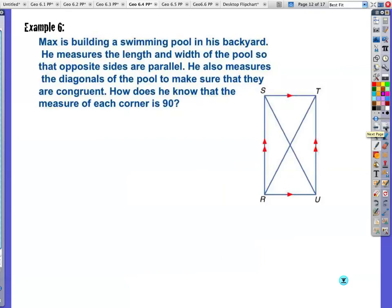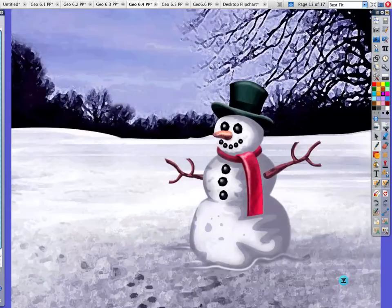Example 6 is very similar here. I have the information to let you know that it's a parallelogram with the red markings just by looking at the picture. Max is building a swimming pool in his backyard. He measures the length and the width of the pool so that the opposite sides are parallel. Check. Parallelogram. He also measures the diagonals of the pool to make sure that they are congruent. How does he know that each corner is 90 degrees? This is like the same question. If the diagonals are congruent, then you have a rectangle. If you have a rectangle, then your angles are going to be 90 degrees. That's kind of that thinking, that thought there. Well, have a happy winter once again.